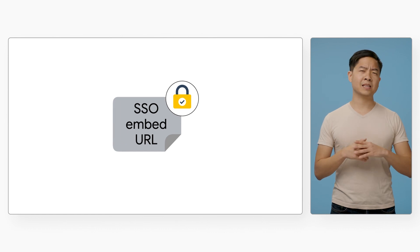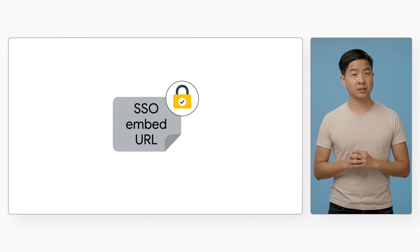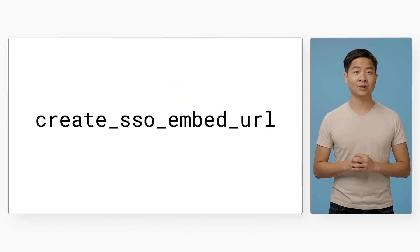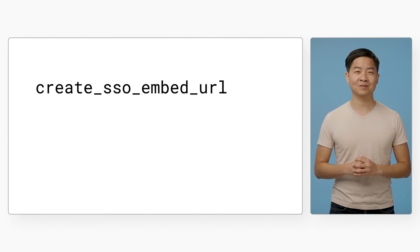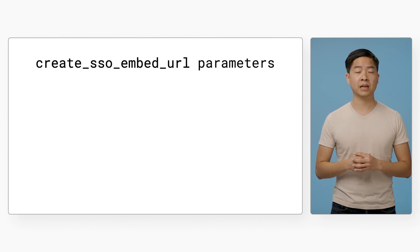So how do we create this SSO Embed URL? You can create it manually, but we provide a convenient API endpoint on your Looker instance to generate it — called Create SSO Embed URL. We will refer to this API endpoint throughout this video. Let's look at some basic parameters you need to pass into the endpoint to generate the URL.